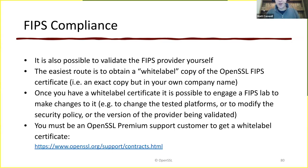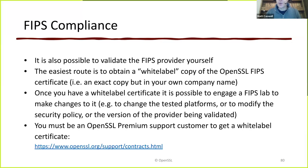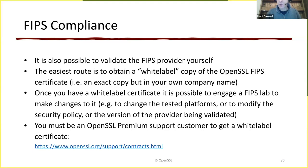It is actually possible to validate the provider yourself if you want to do that. The easiest route is to get a white-label copy of our own certificate — an exact copy of our certificate but in your own company name. Once you have that, you can engage a FIPS lab and make changes to it, such as changing the tested platforms, making modifications to the security policy, or changing the version of the provider that's been validated. In order to get a white-label copy, you have to be a premium support customer.